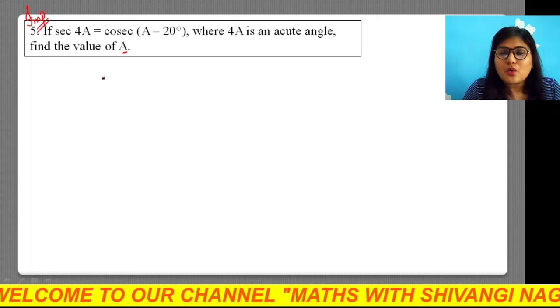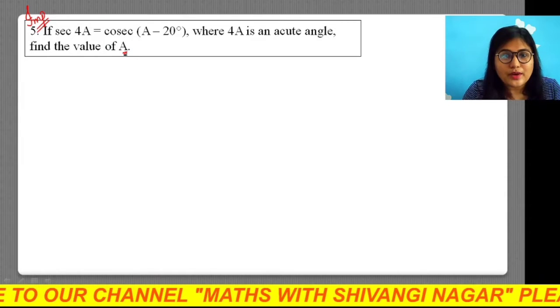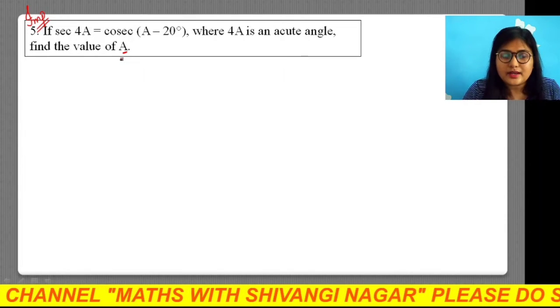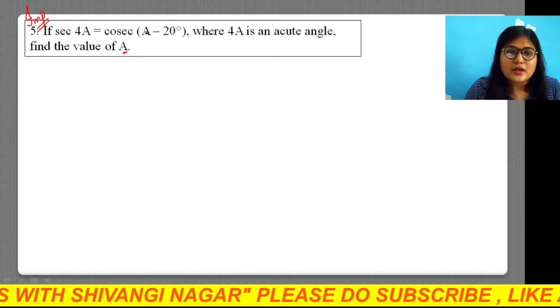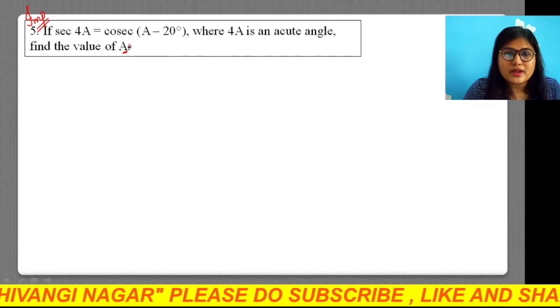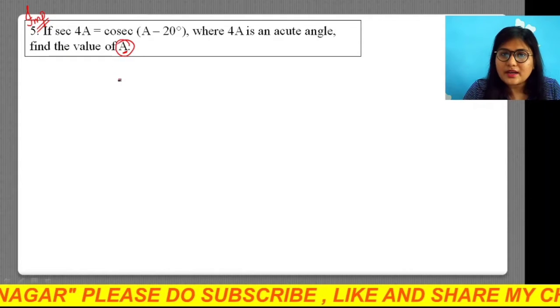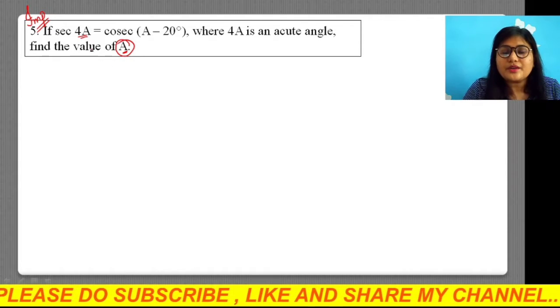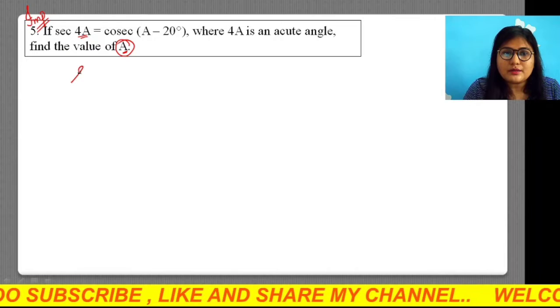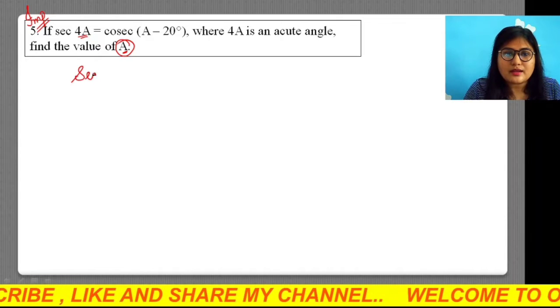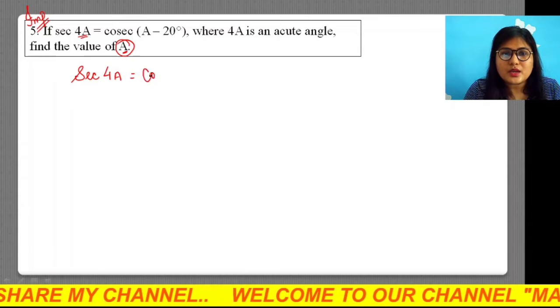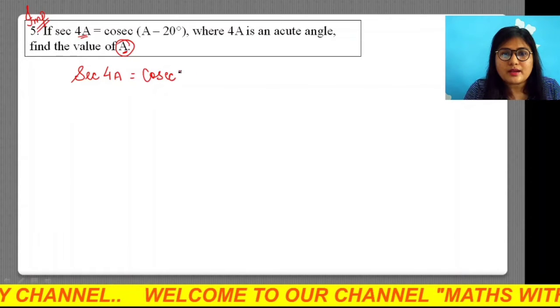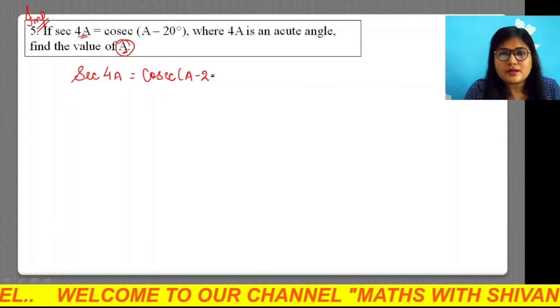Here we have to find the value of the variable A which is in angle form. The trigonometric equation is given in terms of sec and cosec: sec 4A is equal to cosec (A - 20°).